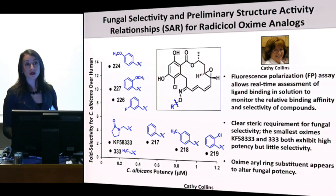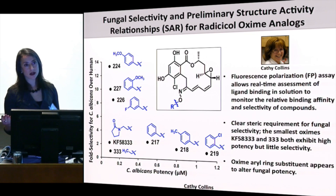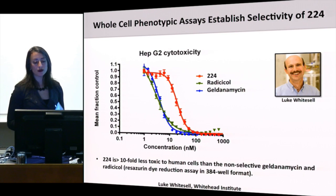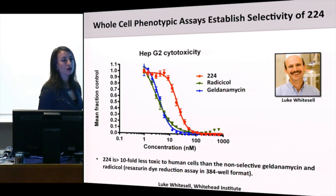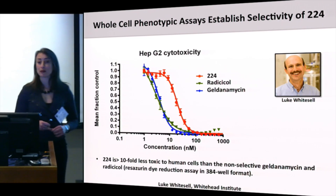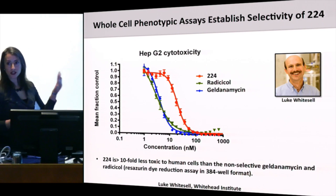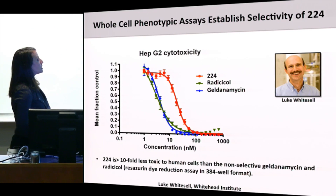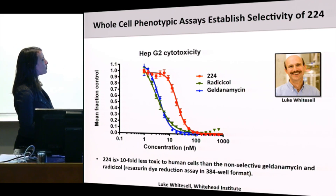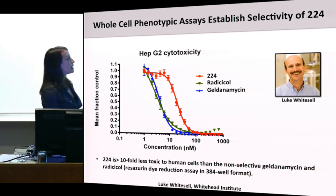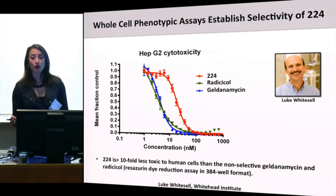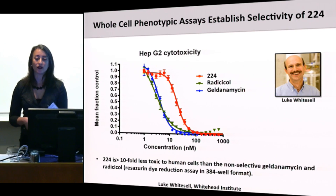We have whole cell phenotypic assays on both mammalian and fungal sides. This work was spearheaded by Luke Whitesell at the Whitehead Institute. Looking at cytotoxicity with HepG2 liver cancer cell lines, compound 224 is about ten-fold less toxic to human cells than non-selective radicicol and geldanamycin, consistent with our biochemical assay showing ten-fold selectivity for the fungal protein.